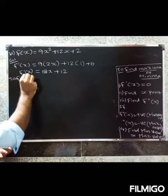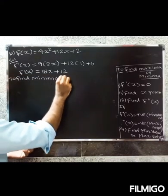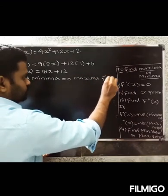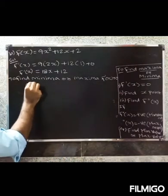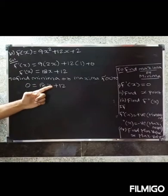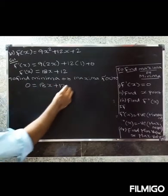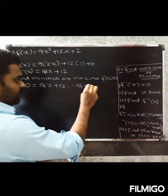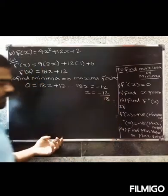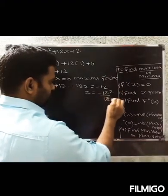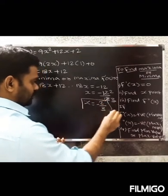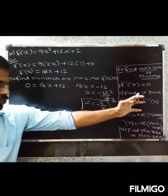To find minima or maxima, set f'(x) = 0. So 18x + 12 = 0, giving 18x = -12, therefore x = -12/18 = -2/3. So the critical point is x = -2/3.